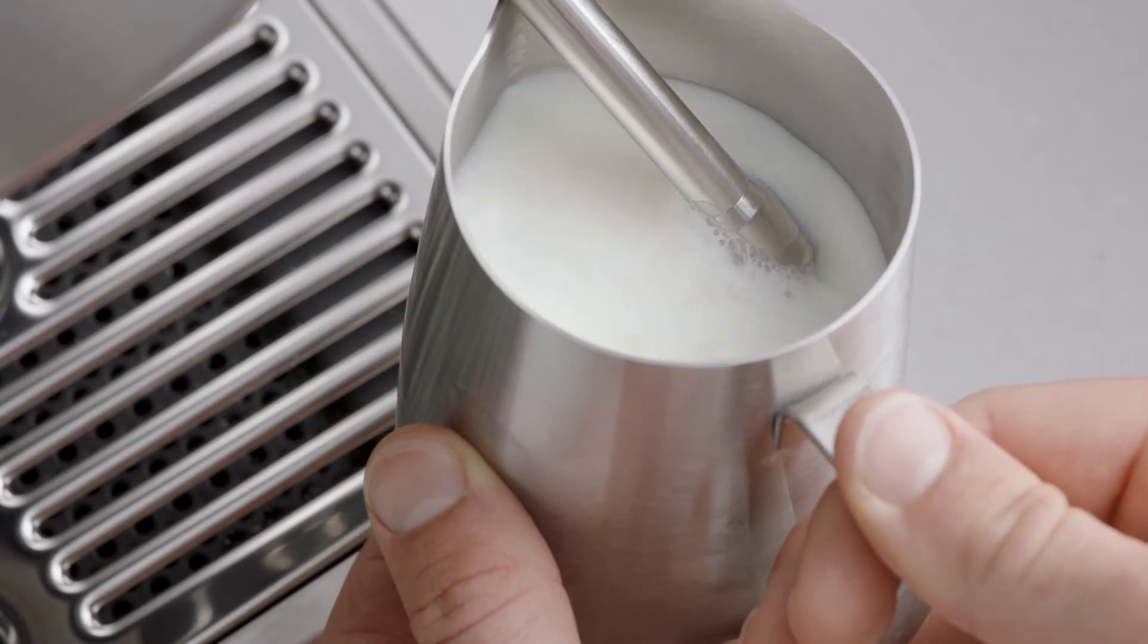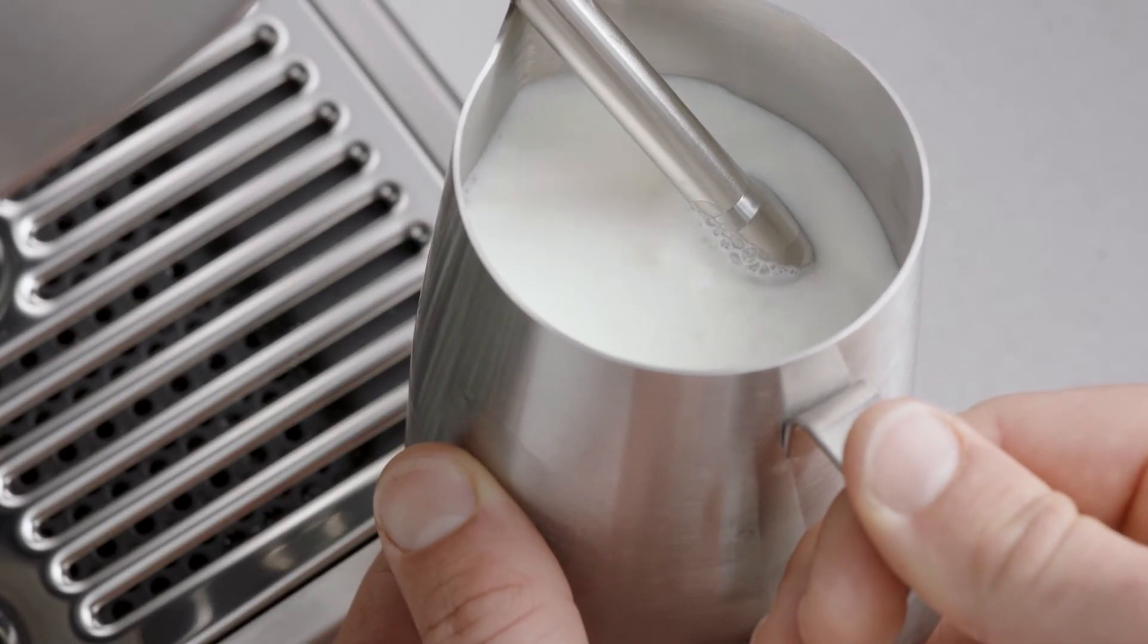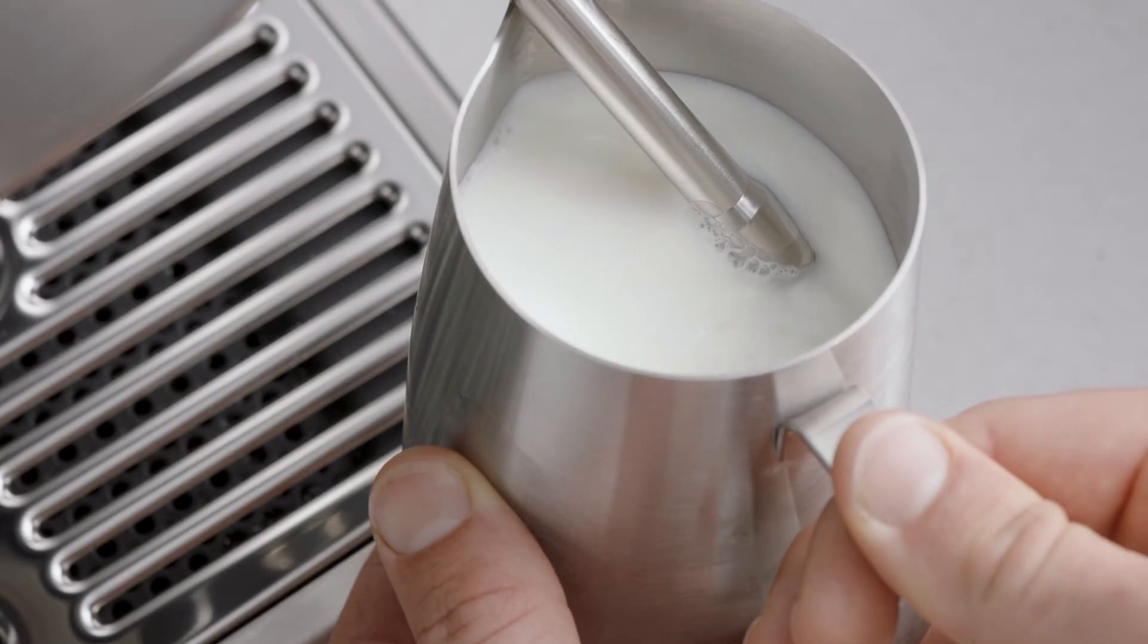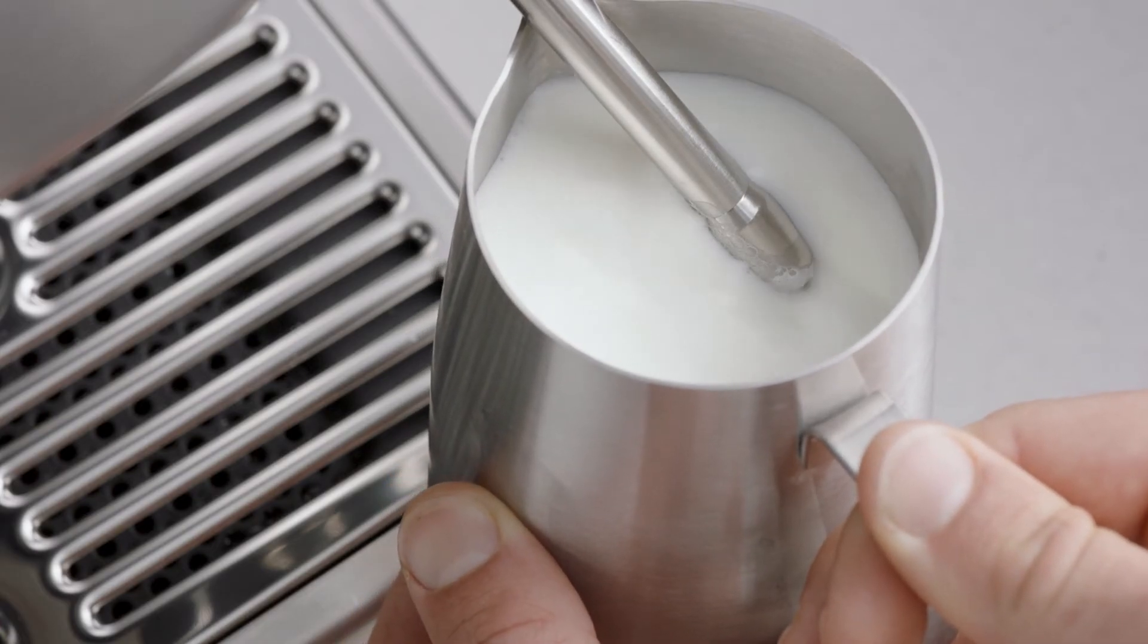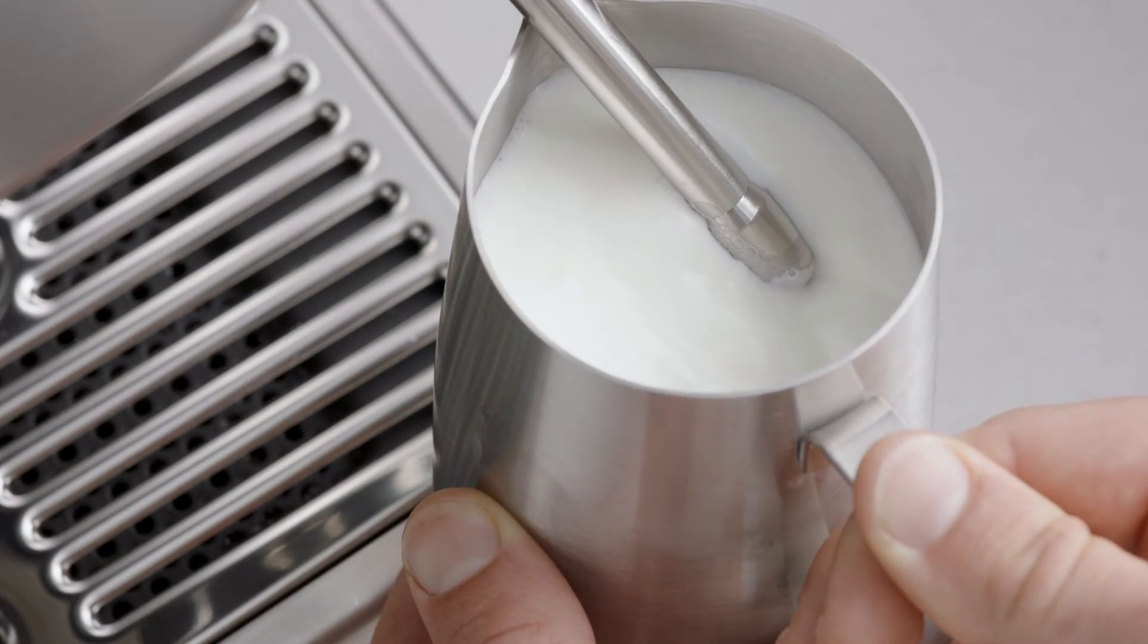With the milk spinning, slowly lower the jug to keep the steam tip just underneath the surface of the milk. This will introduce air into the milk. You may have to gently break the surface of the milk with the tip to get the milk spinning fast enough.